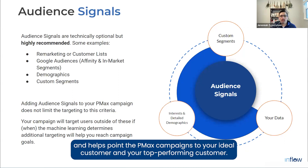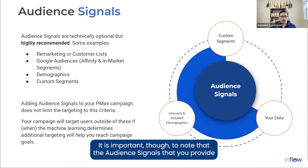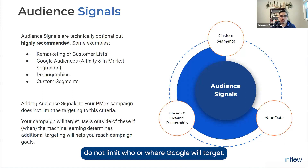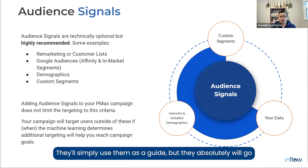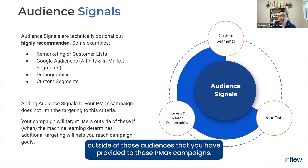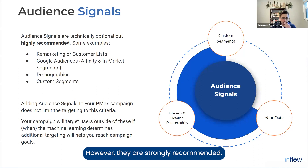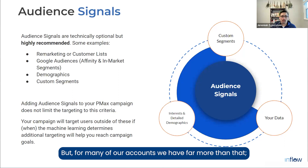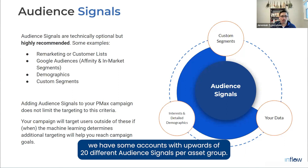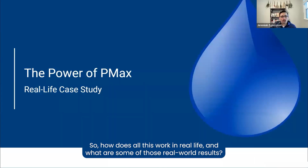Assigning audiences helps speed up the learning process and helps point PMax campaigns toward your ideal customer. It is important to note that the audience signals you provide do not limit who or where Google will target — they simply use them as a guide and will absolutely go outside those audiences. Audience signals are not required but are strongly recommended. Google recommends at least two, but many of our accounts have upwards of 20 different audience signals per asset group.